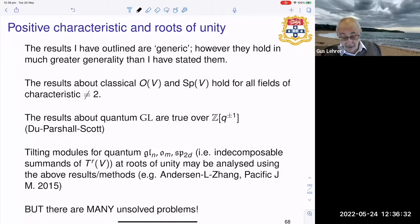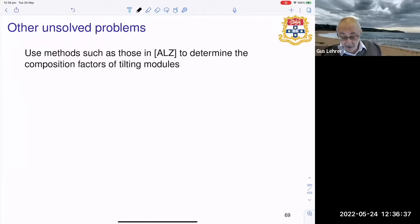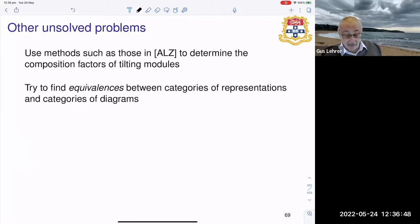But there are still many, many unsolved problems. I'm just going to finish by listing a couple of them. So firstly, the biggest problem is to find composition factors of tilting modules in general, in all characteristics and all values of q, including all roots of unity. So far only very, very, very few general results are known. I mean this brings us to the world of Lusztig's character formula and so on.